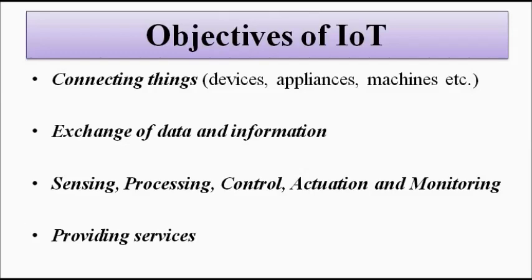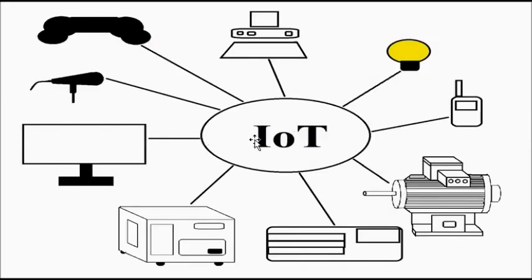How to achieve this whole IoT system? How to make it possible? What enables this to happen? We want this whole system called IoT where everything is connected with each other, there is sharing of information, and all the characteristic features. But how can we achieve that? That is where the key technologies come together to achieve this target, this objective.